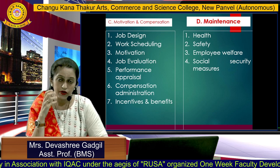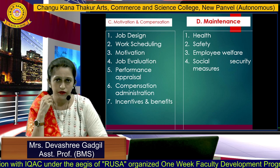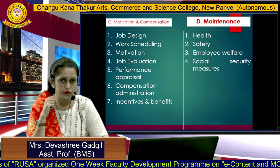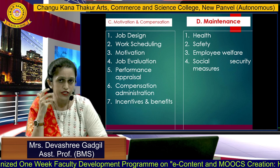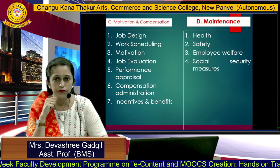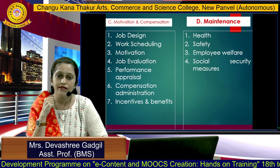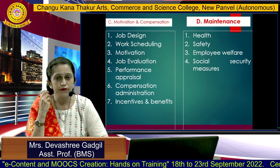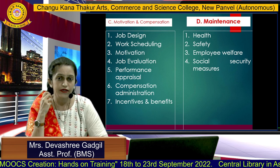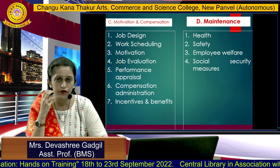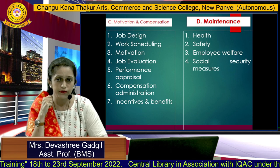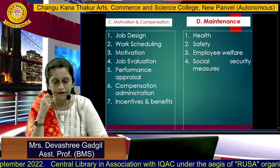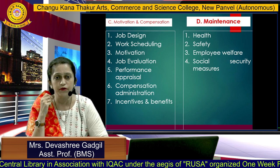Under motivation and compensation: motivation means encouraging and inspiring employees in the organization. The functions include job design, work scheduling — providing day-to-day schedules to human resources — motivation, job evaluation, and performance appraisal, which is the evaluation of the performance of employees in the organization. Also compensation administration, and incentives and benefits — incentives being extra money other than salary given to employees.